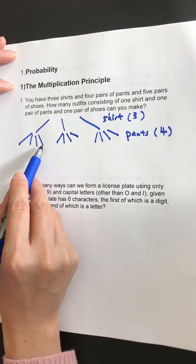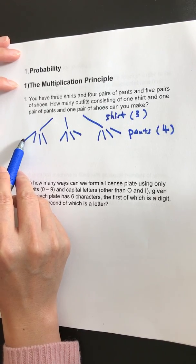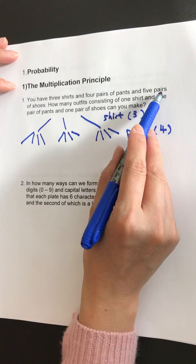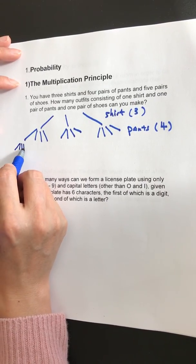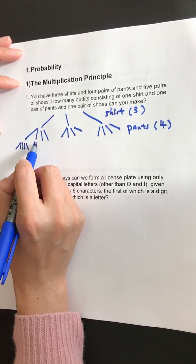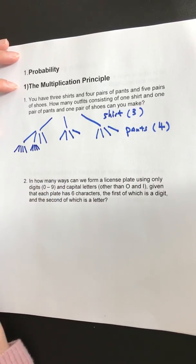And for each shirt, each pair of pants, you can choose a pair of shoes. So how many shoes do you have? You have five pairs of shoes. For every single one, you have five options. For this one, two, three, four, five. For every single one, you would have five options.